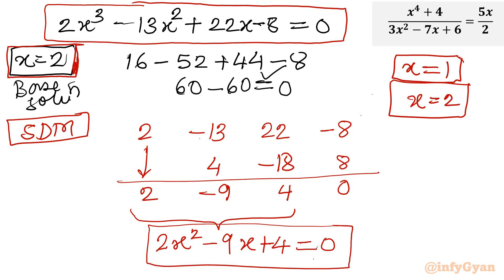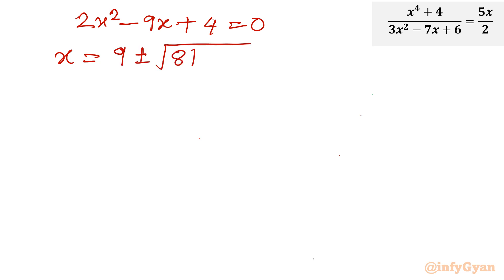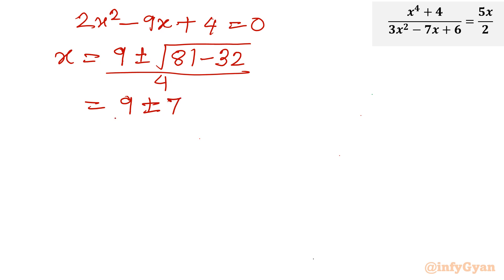We will get 2 more solutions by solving this quadratic. Solving 2x square minus 9x plus 4 equal to 0 using the Shridharacharya formula: x equals 9 plus or minus under root of 81 minus 32, which is 49, so square root 49 is 7, over 4. That gives x equals 9 plus 7 over 4 equals 16 over 4 equals 4, and x equals 9 minus 7 over 4 equals 2 over 4 equals one half.